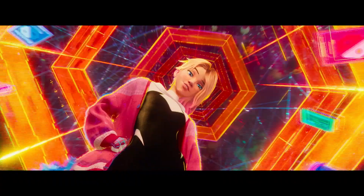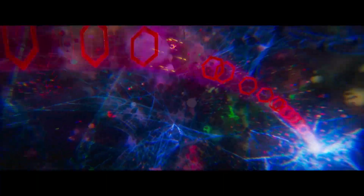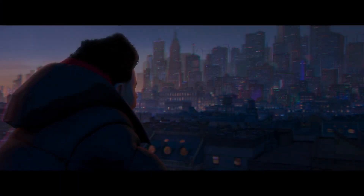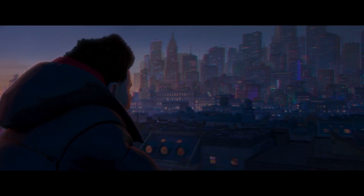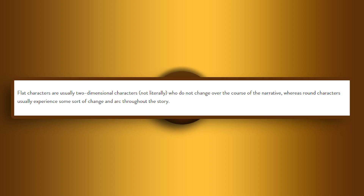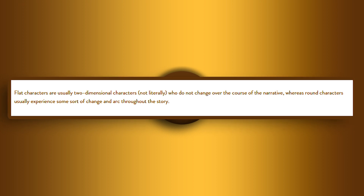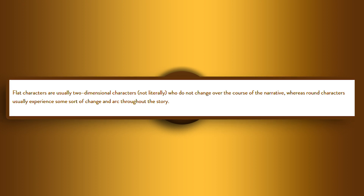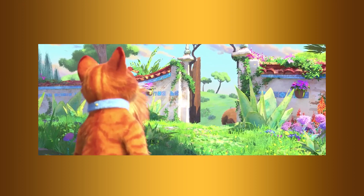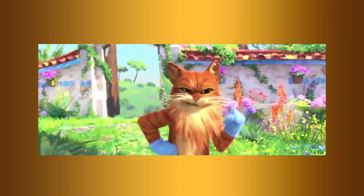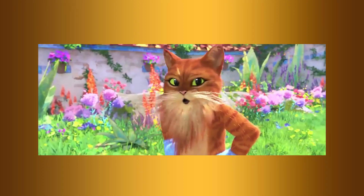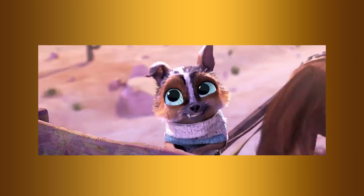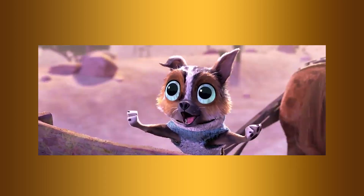So we need to understand some literature terms that we'll be using throughout this video. You can't say character complexity and not understand the terms around it. The term we need to know before understanding character complexity is round characters. Round characters, to simply put, usually experience some sort of change throughout the story. While contrasting it, you have flat characters who are usually two-dimensional — basically they don't change over the course of the narrative. Round characters are normally main characters, because you want your lead protagonist to be complex so that you can flesh out such complexities to make these characters feel real or human. This is not to say that flat characters cannot be complex, but fleshing out their complexity is not the main goal of the writer.